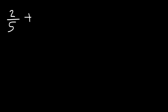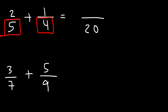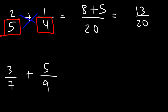Now it's your turn. Go ahead and add the following fractions: 2 over 5 plus 1 over 4. Feel free to pause the video and try that. Let's start: first we multiply 5 and 4 — 5 times 4 is 20. Then cross multiply: 2 times 4 is 8, and 5 times 1 is 5. Now we add 8 plus 5, which is 13. So the answer is 13 over 20.